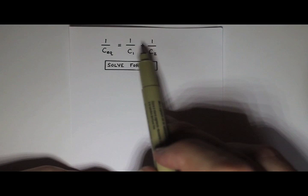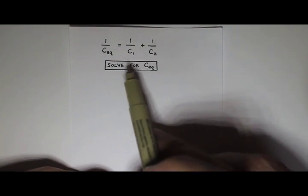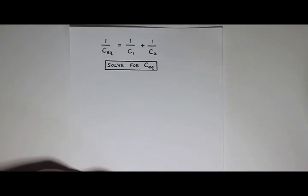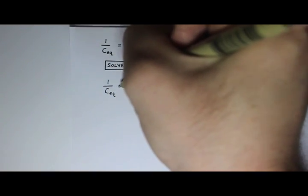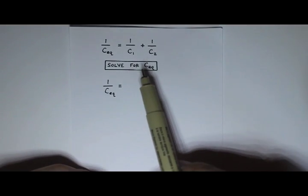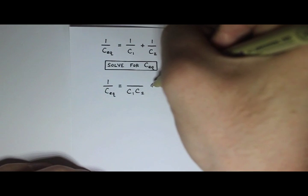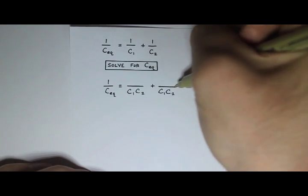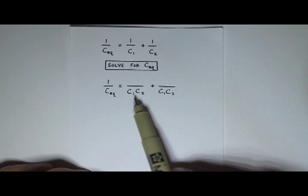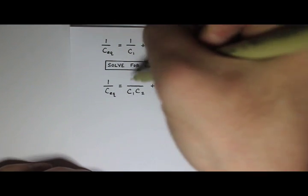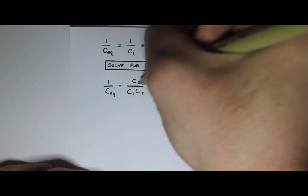So the first thing I'm going to do is actually combine the 1 over c1 plus 1 over c2. Now these are fractions, and the way you add fractions is by giving them a common denominator. So 1 over c equivalent equals, and my common denominator is going to be c1 times c2. So c1 times c2 plus c1 times c2. Now the first fraction, 1 over c1, in order to make it have a denominator of c1 c2, I need to multiply the top by c2.